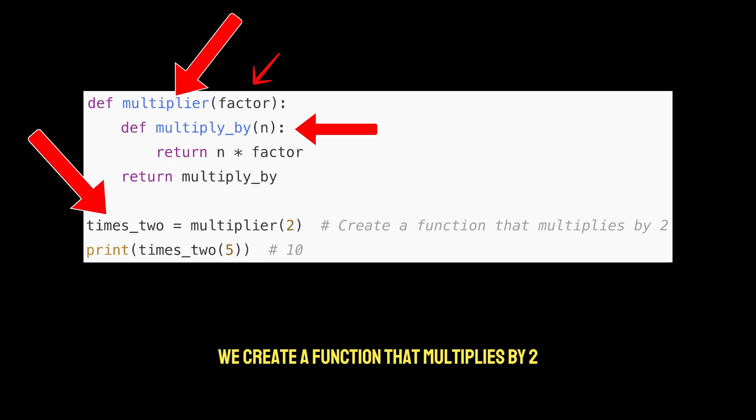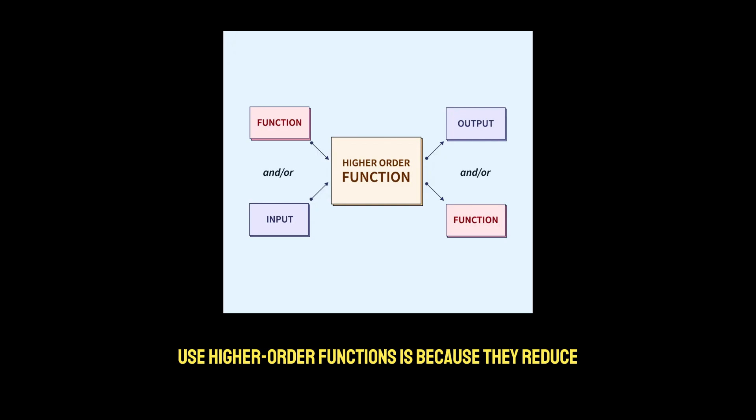So notice that in this line we create a function that multiplies by 2, and in the following line we call the function that has been returned by the higher order function, which multiplies our argument of 5 by 2 and outputs 10.